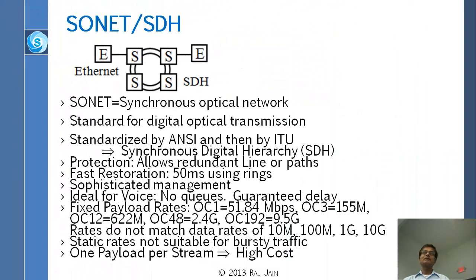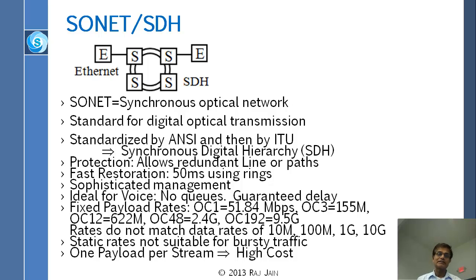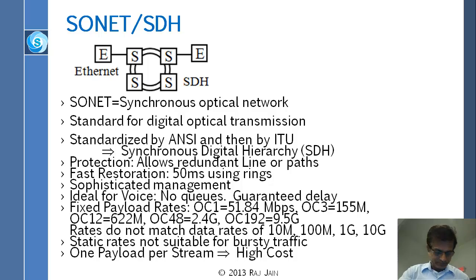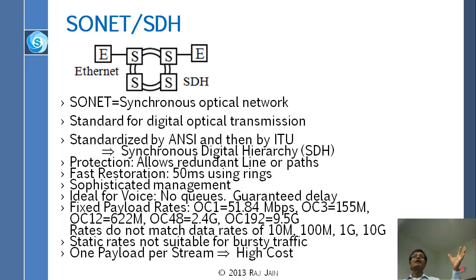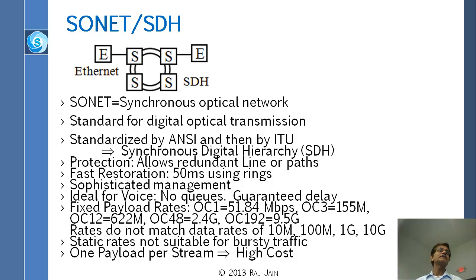Then they needed even more circuits to be connected, because once they wanted to go across the city or connect with another carrier — which was actually MCI — AT&T wanted to connect to MCI. They said, let's connect by optical fiber, and they came up with a system for connecting with optical fiber which was called SONET — Synchronous Optical Network. This is the standard for digital optical transmission. It was standardized by ANSI and then by ITU.